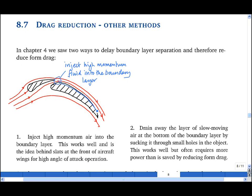Now this was used in order to stop stall, however, of course it also reduces form drag because it reduces the size of the wake of the wing.